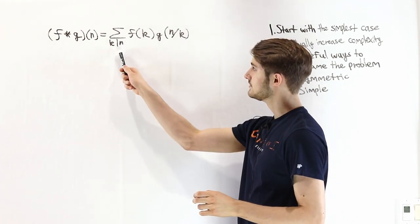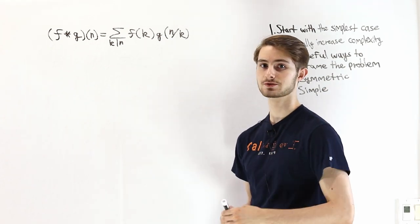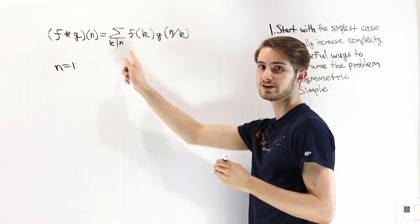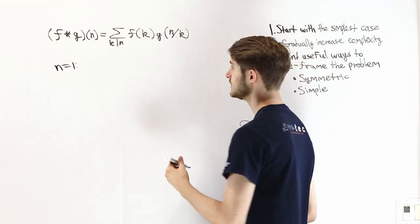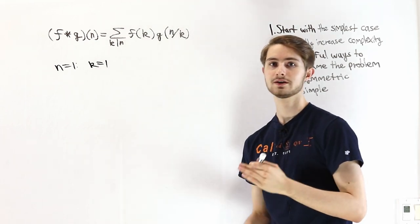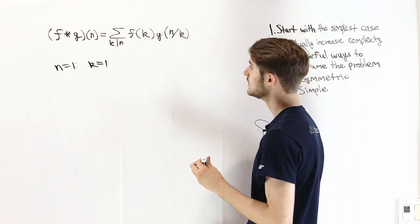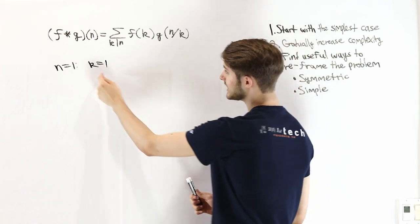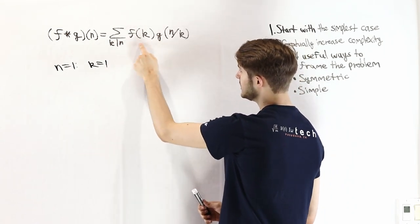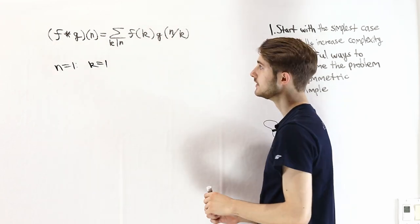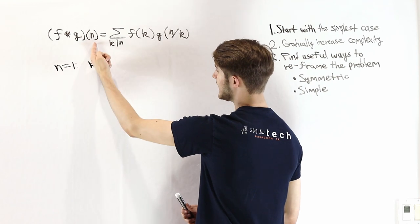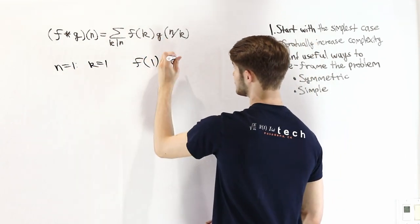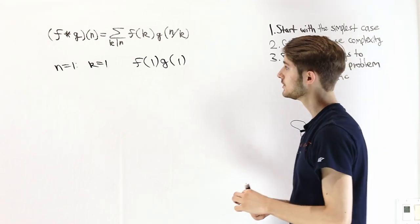Now that we understand what k divides n means, let's look at the simple case n equals 1. The only factor of 1 is k equals 1, since we're only looking at positive integers. So when we evaluate the convolution at n equals 1, we just get f of 1 times g of 1 over 1, which is f of 1 times g of 1.